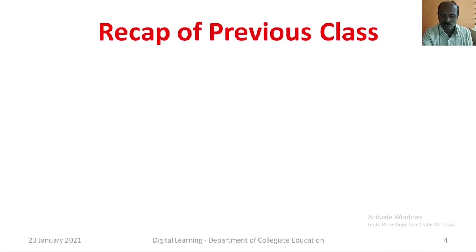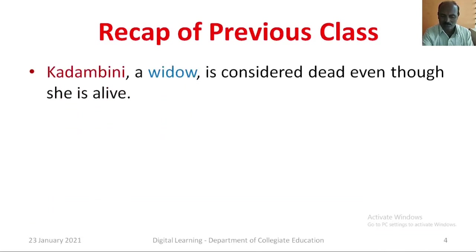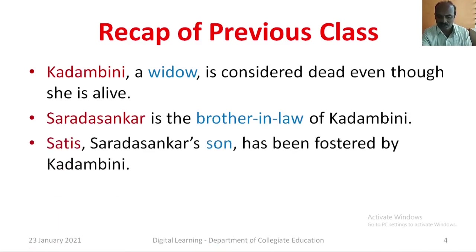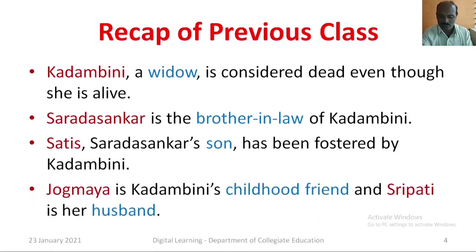Let us recall what we have learned in the previous session. Kadambini, a widow, is considered dead even though she is alive. Sharada Shankar, the Zemindar, is the brother-in-law of Kadambini. Satish, Sharada Shankar's son, has been fostered by Kadambini. Jogamaya is Kadambini's childhood friend and Shripati is her husband.